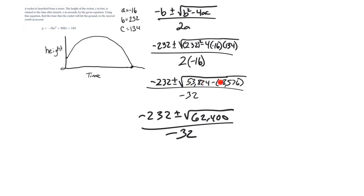When I combine these, when I do 53,824 minus a negative 8,576, I end up with 62,400.